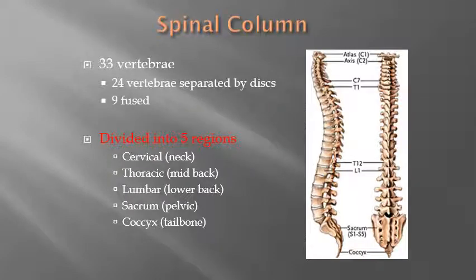When we look at the spinal column, looking at the different sections, there are 33 total vertebrae. The vertebrae are the bones that make up the spinal column. You're going to have 24 vertebrae separated by discs, and we'll talk about the individual functions of the disc. Then you have what are called nine fused vertebrae — vertebrae that are essentially continuous with one another, with no separation between them.